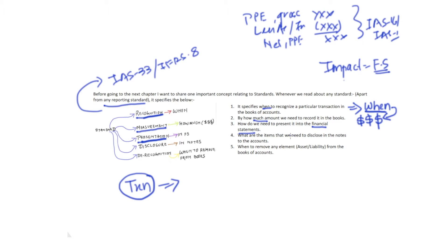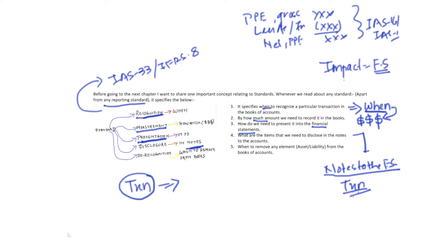The fourth point is disclosure. Disclosures are provided in the notes to the financial statements, which means we need to specify the information required to be presented in the notes in respect of that particular transaction. For example, for accounts receivable, the disclosures are covered by IFRS 7 and 9, so we need to read those areas and understand what disclosures to provide.